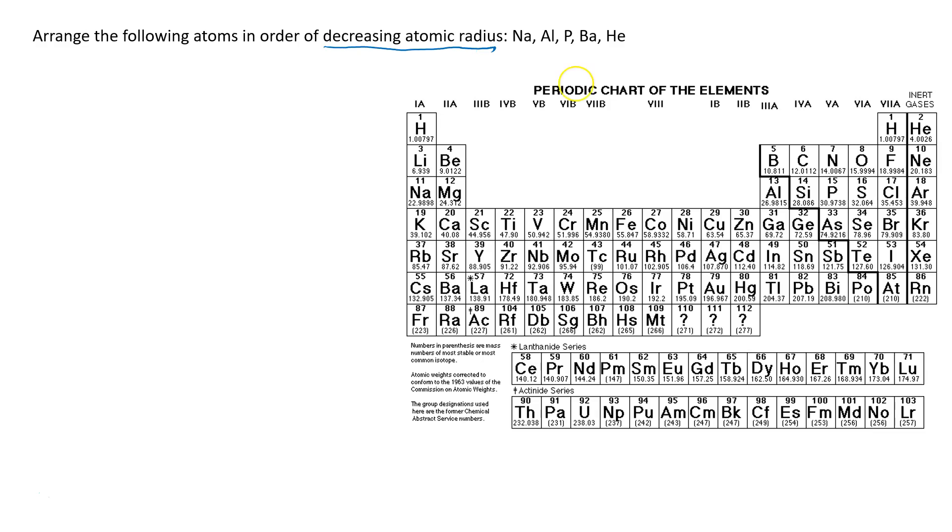So when faced with a problem like this, I like to make a list of the elements. And then the first thing I want to know is what shell is it in in the periodic table, or how many shells does it have?